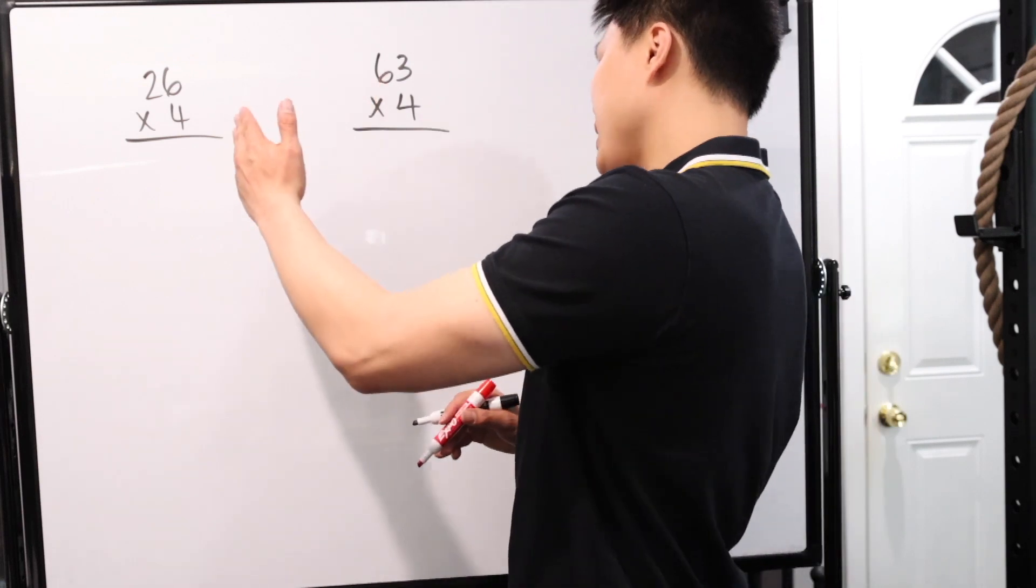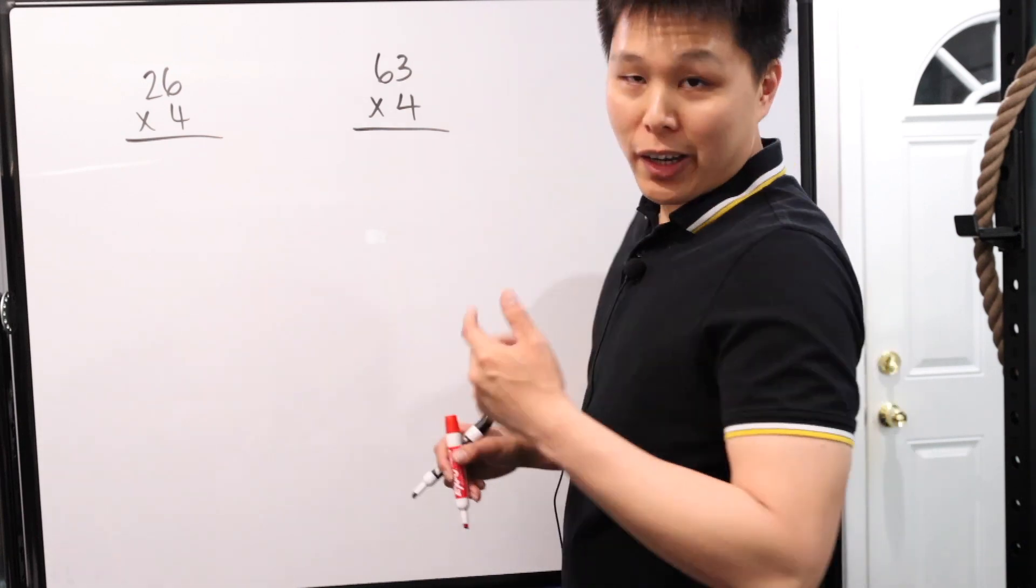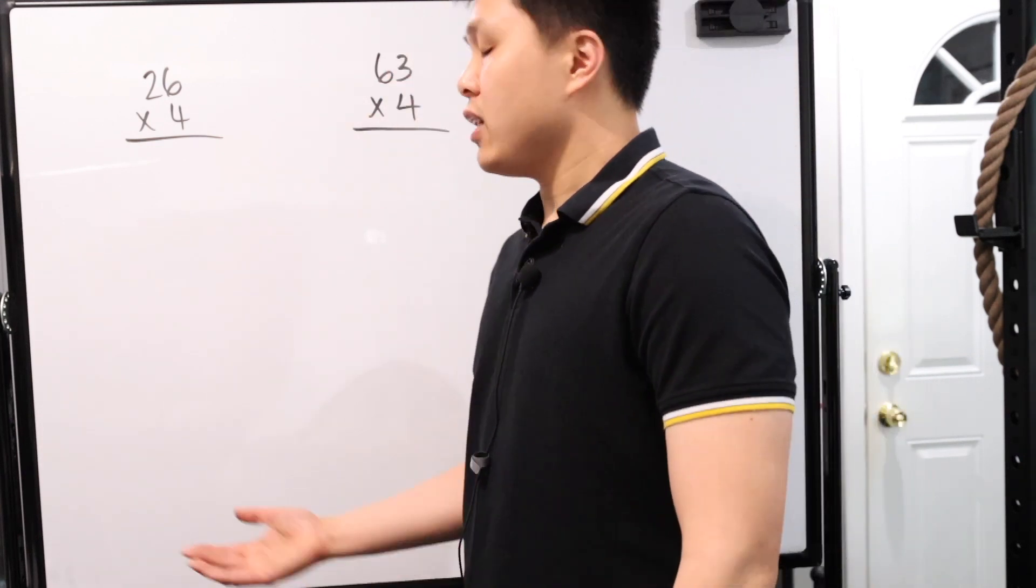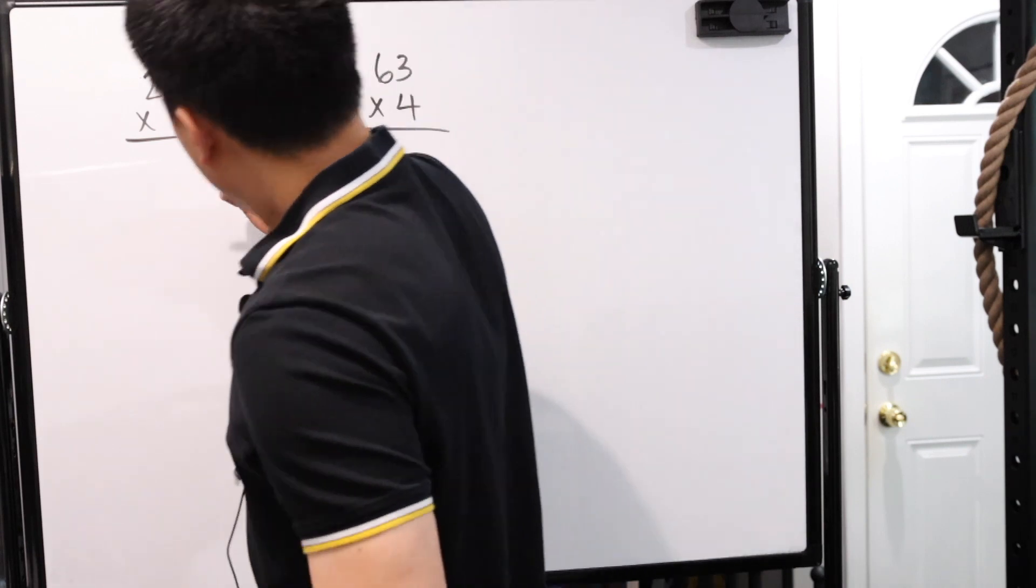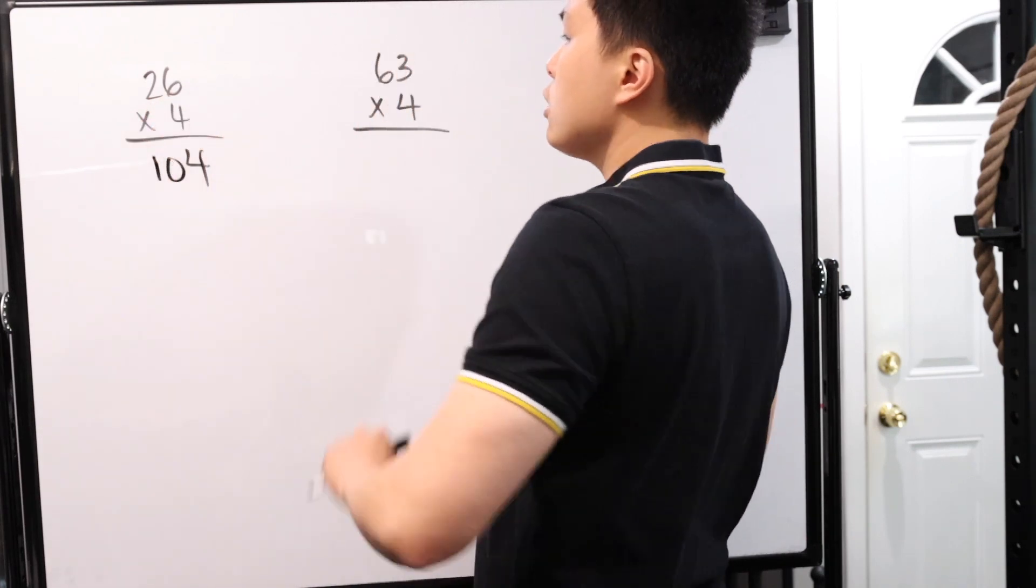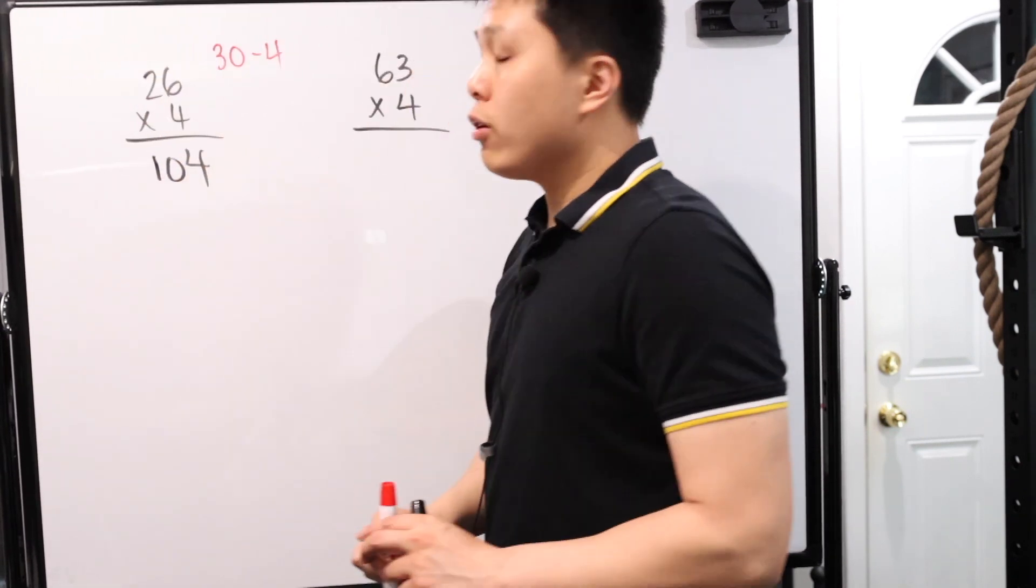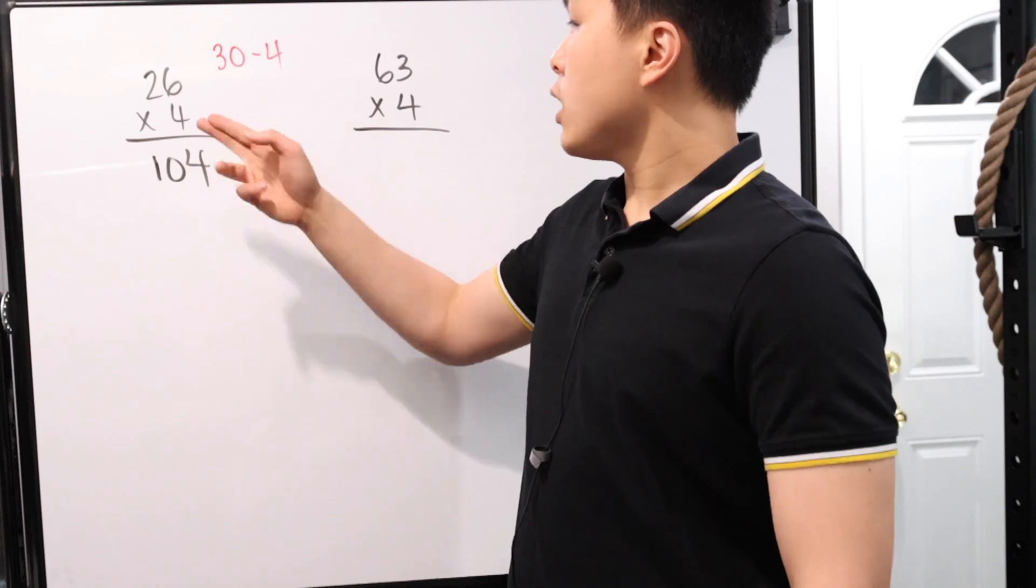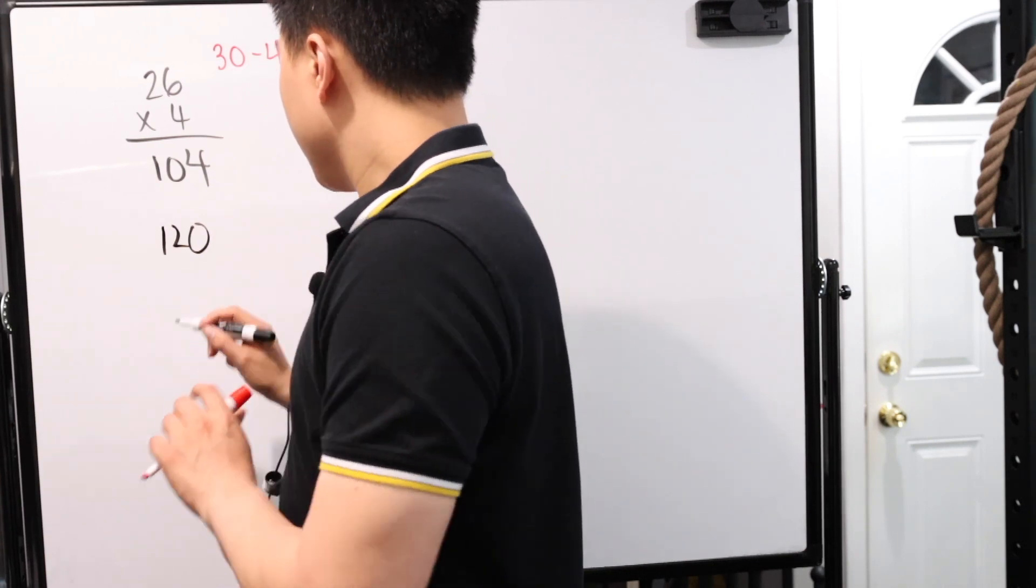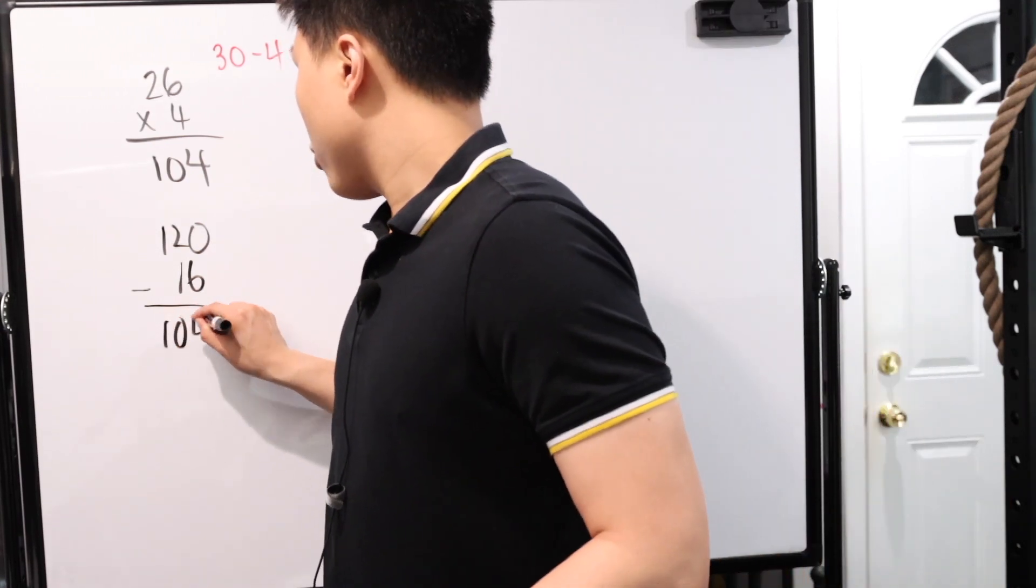All right, so we have our next example. We have 26 times 4 and 63 times 4. Now, once again, immediately, hopefully you guys are already computing the answer. We look at this one, for example, and what is that? That's 120 minus 16. That's 104. So in that case, I would say this is 104. And the reason I said 120 is because I'm breaking this guy down. This is 26. That number is greater than five. So immediately I'm thinking 30 minus 4. You don't have to do it this way, but I find it a lot easier. So 30 times 4 is 120. And then of course, 4 times 4 is 16. And since it's a bigger minus, this is going to be 120 minus 16. That's 104.